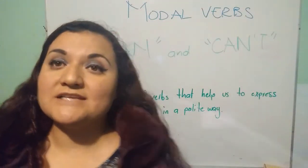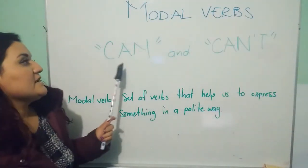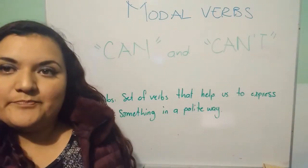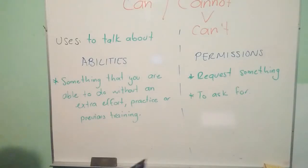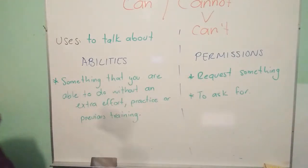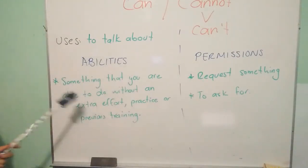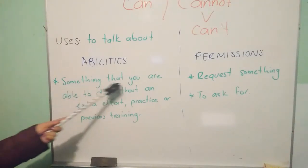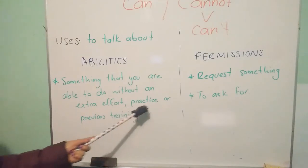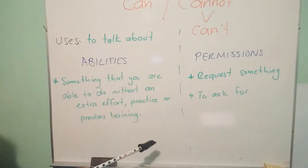Ahora, esta vez nos vamos a enfocar en el verbo can y can't. So, when we say that can and cannot are used to talk about abilities and permission, it's because if you want to express something that is your ability, it's something that you are able to do without any extra practice or previous training.